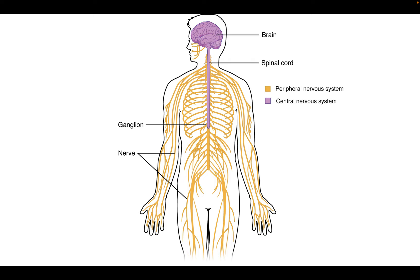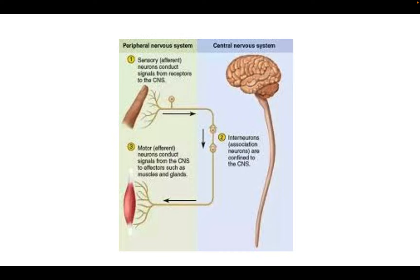We have other cells in our nervous system, but the neurons are the cells that transmit most of the information. The other cells are supporting cells. So we're going to focus on our nerves, which are made up of neurons.